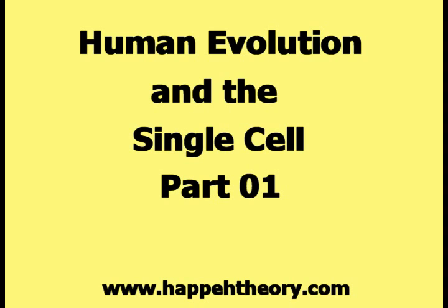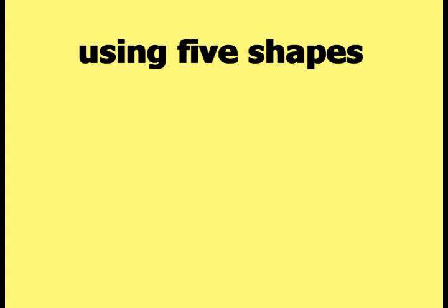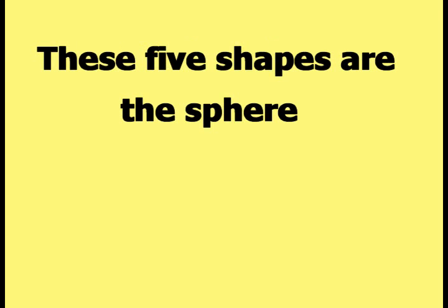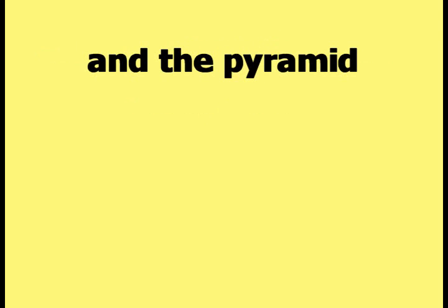This video is part one of the series on human evolution and the single cell. According to Happy Theory, the construction of the human body can be described at a basic theoretical level using five shapes: the sphere, the circle, the spiral, the triangle, and the pyramid.